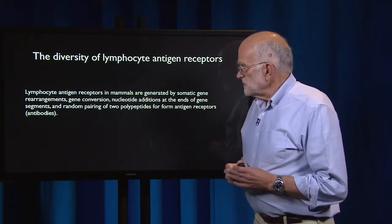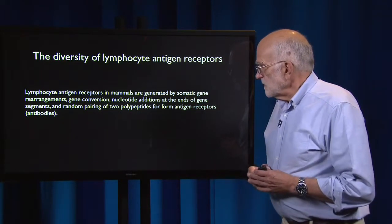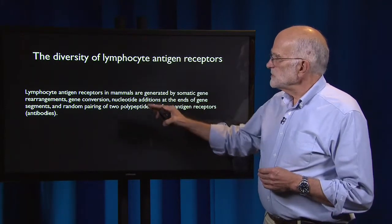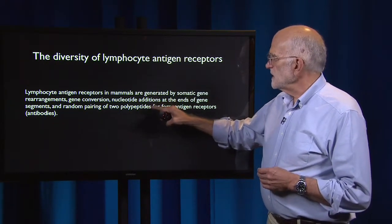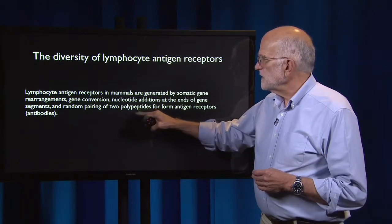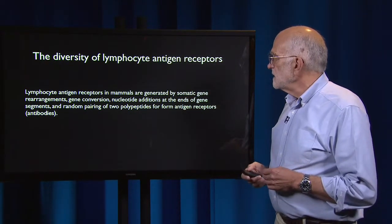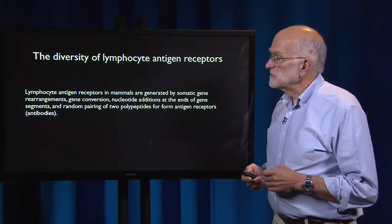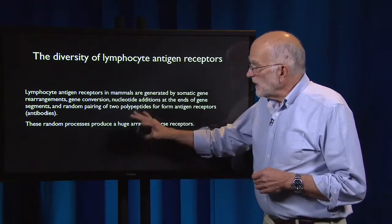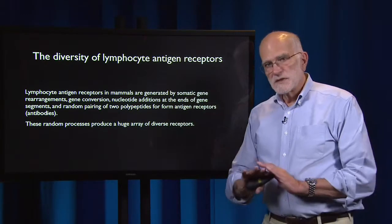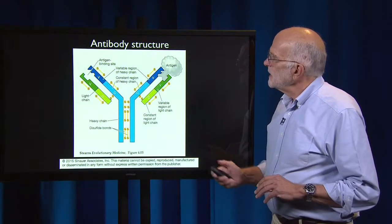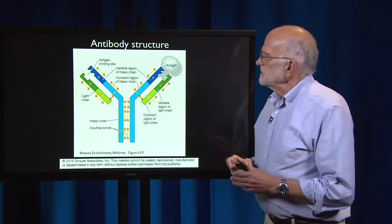The lymphocyte antigen receptors in mammals are generated by somatic gene rearrangements, gene conversion, nucleotide additions at the ends of gene segments, and random pairing of two polypeptides to form antigen receptors or antibodies. These random processes produce the initial huge array of diverse receptors.